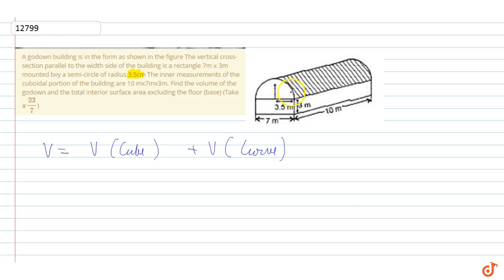This is the side of the side, 7, 10 and 3. So this is the volume of cuboidal part. It is equal to 7 x 3 x 10 plus volume of curved part. It is equal to pi r square by 2. Pi r square radius is 3.5 and I can say 7 by 2, pi r square is 7 by 2 x 7 by 2. And h is 10.